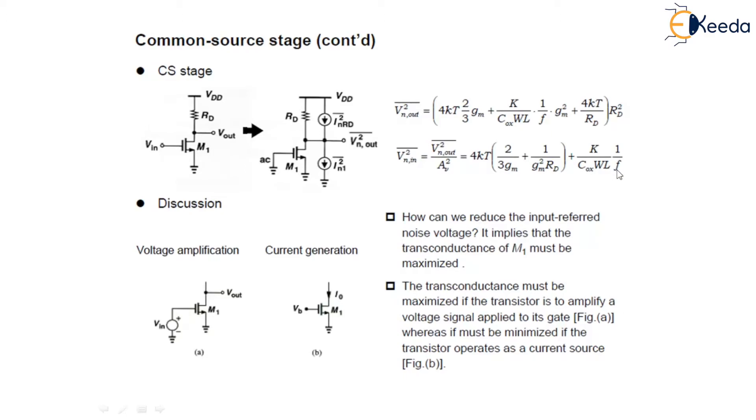Now the question comes, how we can reduce the input-referred noise voltage? So the above equation implies that the transconductance of M1 must be maximized to decrease this input-referred voltage and they both are inversely proportional. So if we increase the transconductance, it will decrease the input-referred noise voltage.